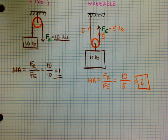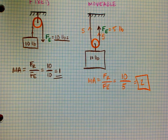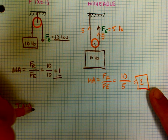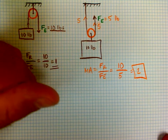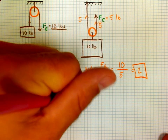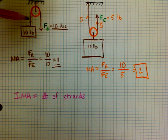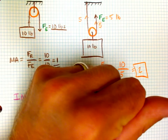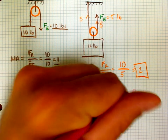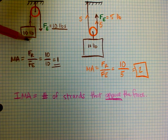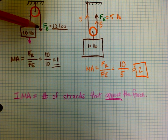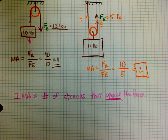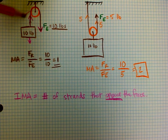For a shortcut to figure out mechanical advantage, the idea is to count the number of strands — meaning ropes — that oppose the force directionally. For the fixed pulley, I have two strands here, but I'm pulling downward on this rope, so they're not going the opposite direction — it does not get counted. I only have one strand providing upward force, so the mechanical advantage is one.